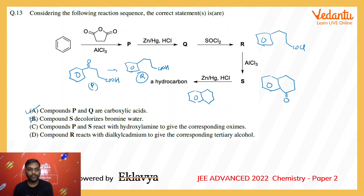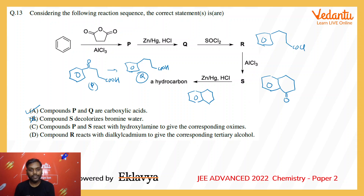Option C says compounds P and S react with hydroxylamine to give the corresponding oxime. Reaction with hydroxylamine is the property of a carbonyl group, and since both P and S contain a carbonyl group, this is correct.